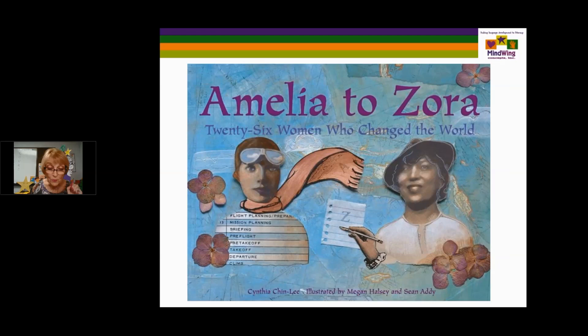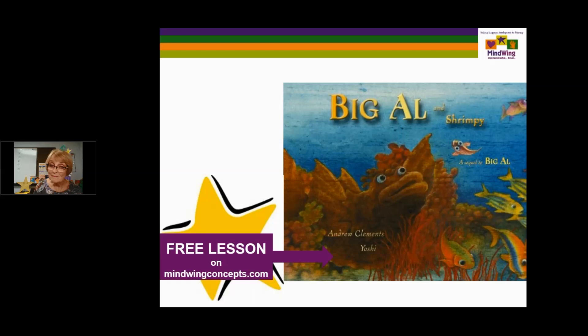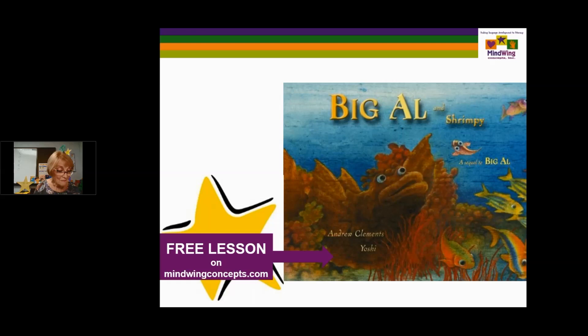Big Al and Shrimpy — Big Al was the first book I ever used with Story Grammar Marker, and this is a sequel by the same author. It's a parallel structure — 'in the wide blue sea there was a very clever fish named Shrimpy.' Big Al remembers things, Big Al and Shrimpy become friends, and Shrimpy saves Big Al. The illustrations are by Yoshi, which are dynamic.